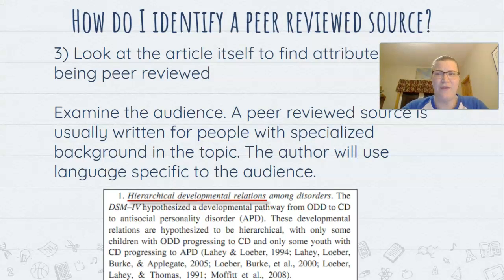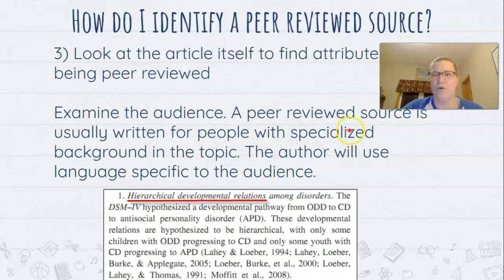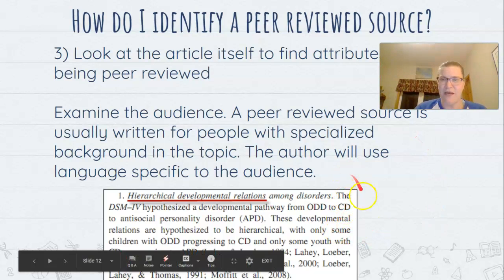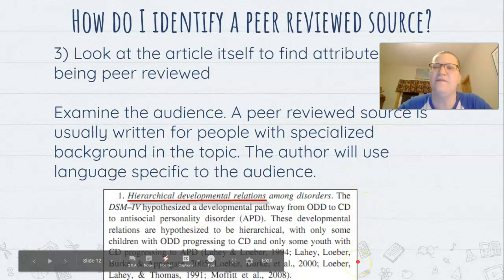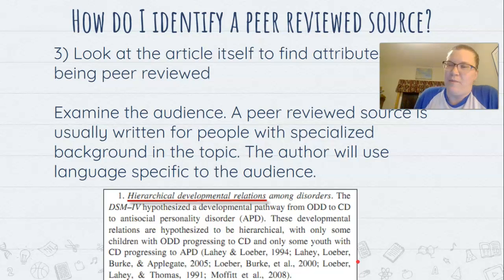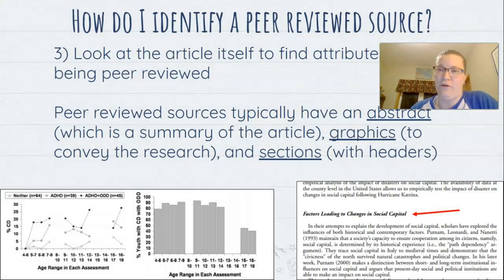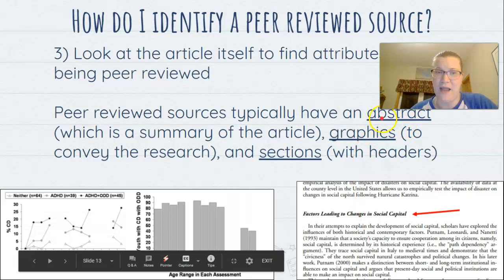You can also look at whether the article seems written for a specific audience using specialized language — language specific to people with background in this topic. A peer-reviewed source is written for people with background in the field, so if you read it and think 'this is clearly written for someone with expertise in this topic,' that's another identifier. You can also look for an abstract, which is a summary of the article — peer-reviewed sources typically have one.